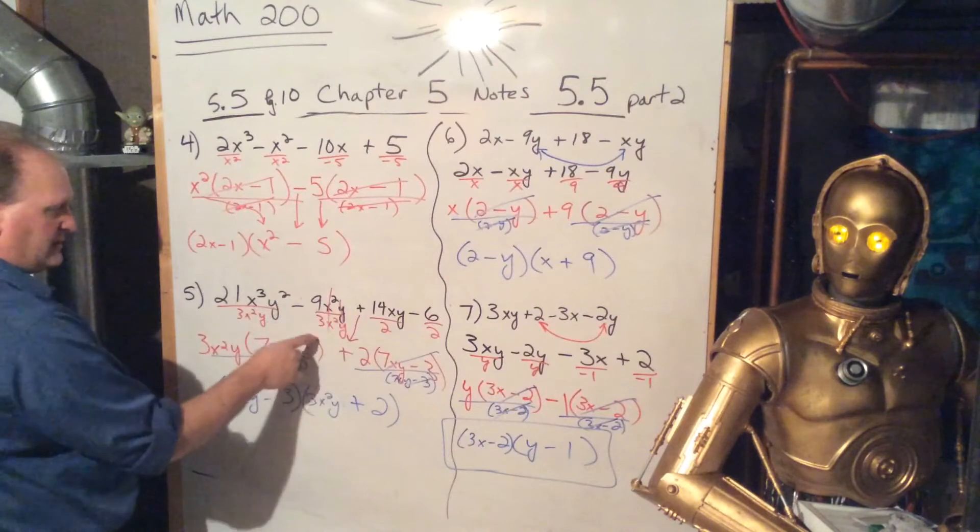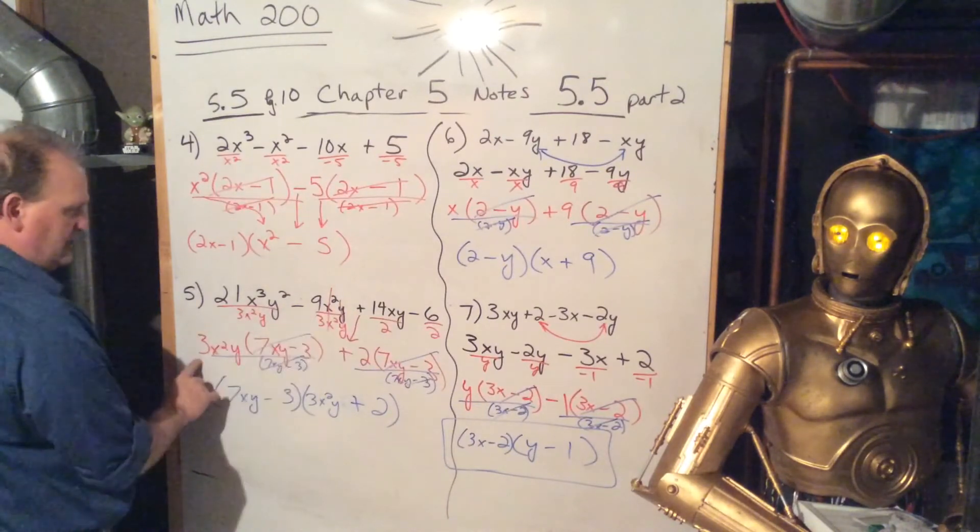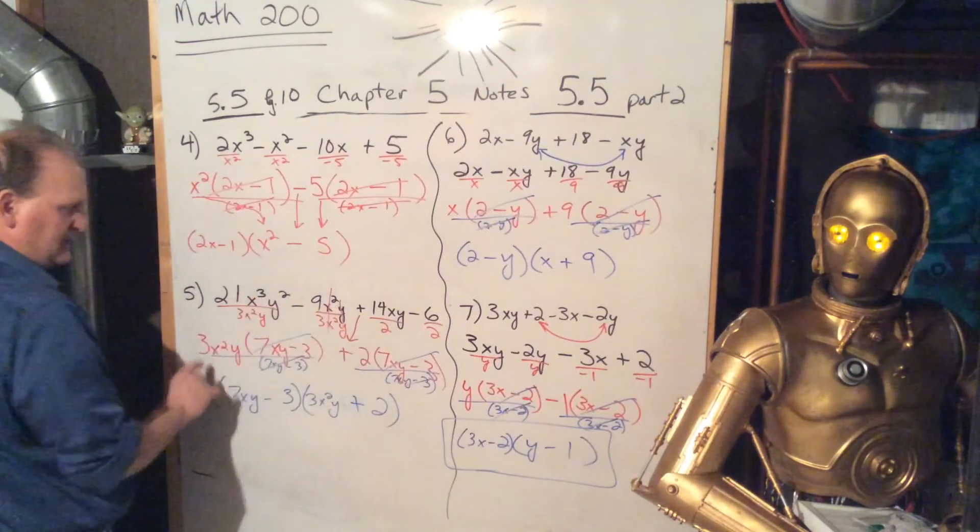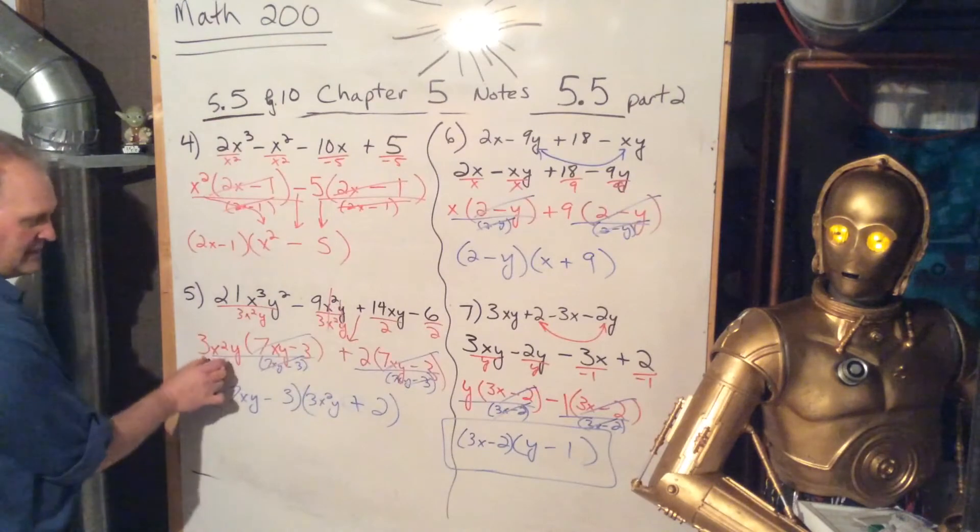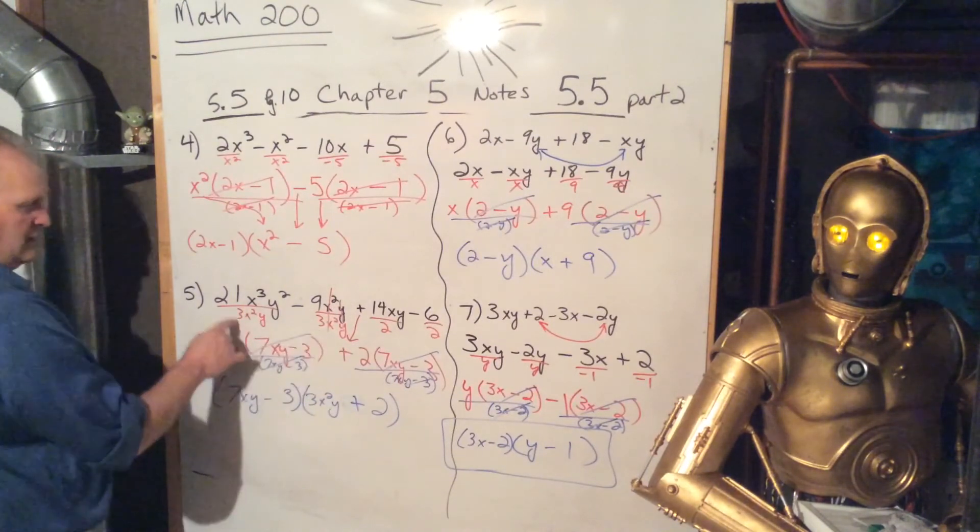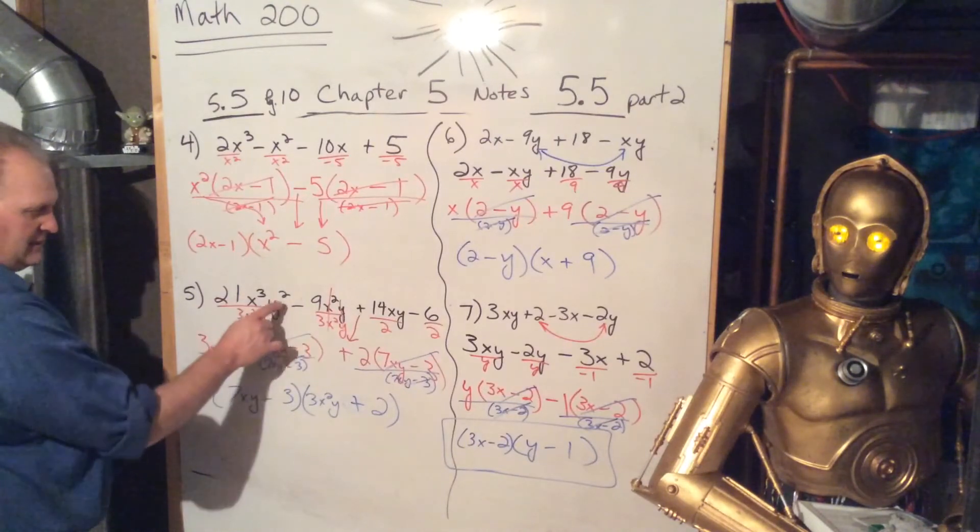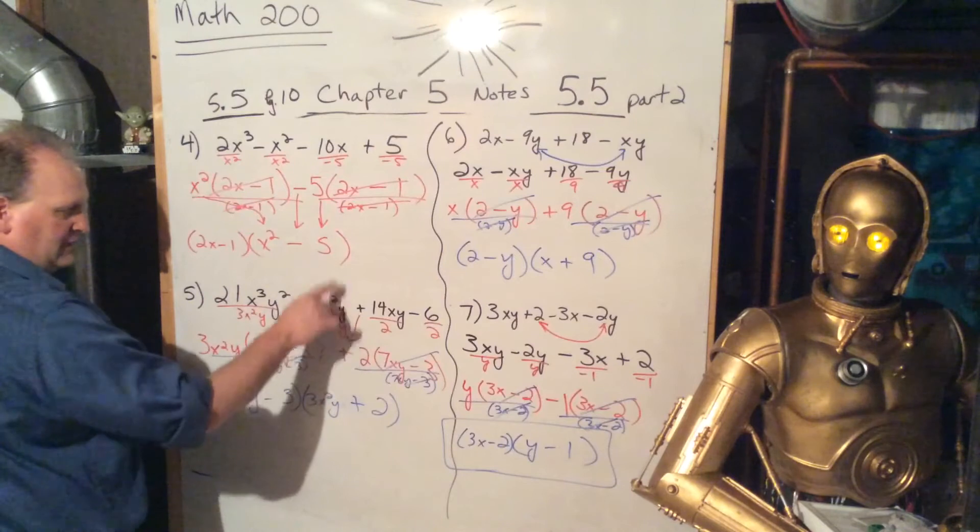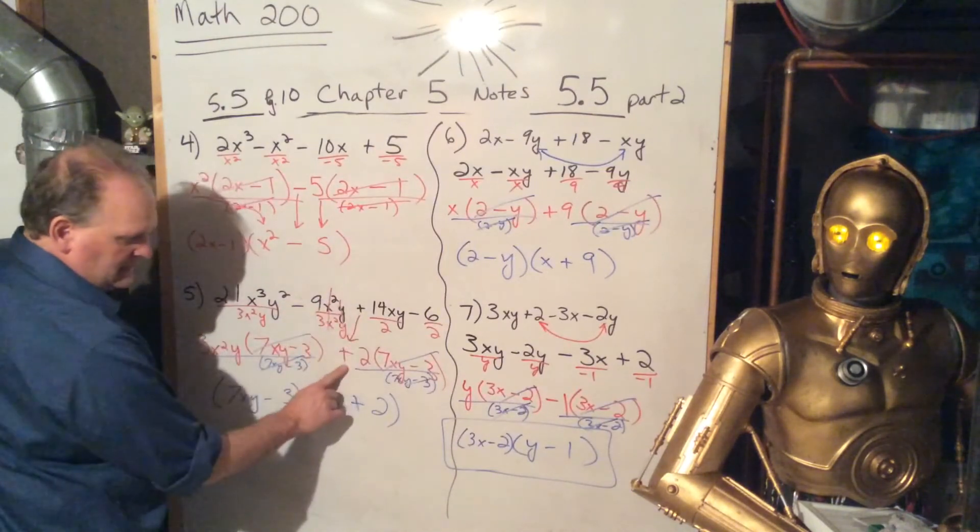Greatest common factor is 3x squared y, because between 21 and 9 is 3, between x to the third and x to the second, it's x to the second. Between y squared and y, it's y. So you write that down front, write it underneath each term, reduce, so we have 7xy, and x squared and y cancel, and we have just 3. The plus is still right there.